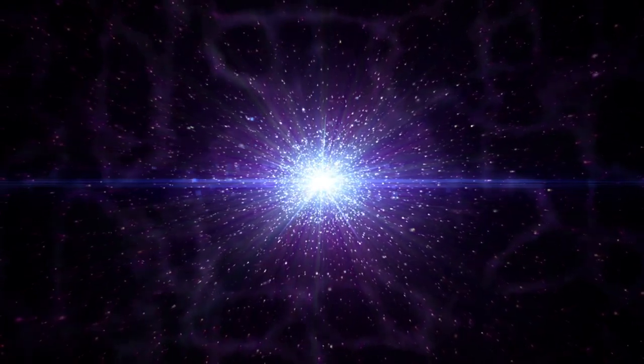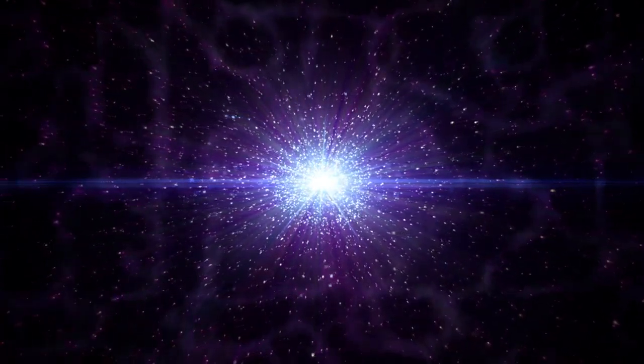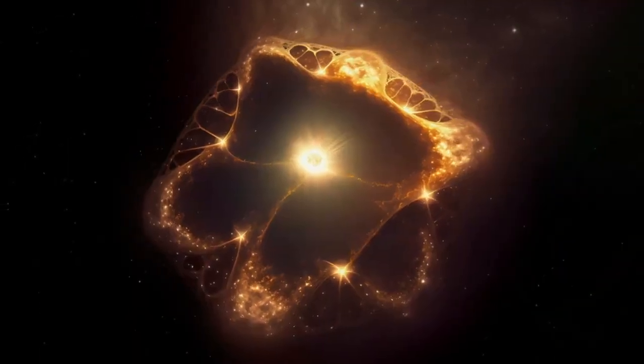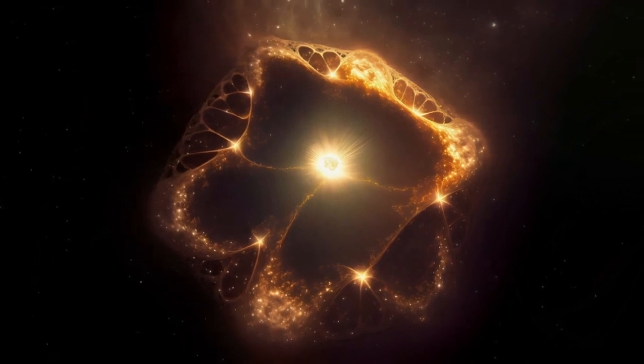There are two main types of supernovae, each with different causes and effects. Type 2 supernovae occur when a massive star runs out of fuel and collapses in on itself, while type Ia supernovae result from the explosion of a white dwarf star in a binary system.